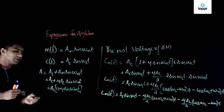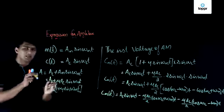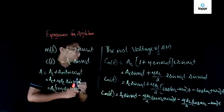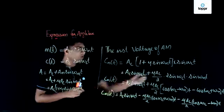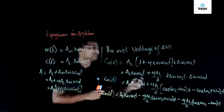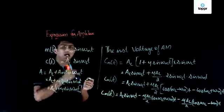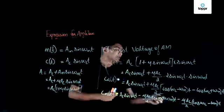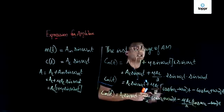Taking Ac as common gives Ac·(1 + μ·sin(ωm·t)). The instantaneous voltage of the amplitude modulated wave is then Cm(t) = Ac·(1 + μ·sin(ωm·t))·sin(ωc·t). Applying the trigonometric substitution 2·sin(A)·sin(B) = cos(A − B) − cos(A + B), we arrive at the final equation: Cm(t) = Ac·sin(ωc·t) − (μ·Ac/2)·cos((ωc + ωm)·t) − (μ·Ac/2)·cos((ωc − ωm)·t).